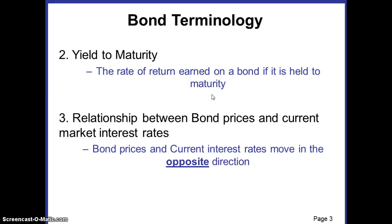...the rate of return he earns on that bond held until the maturity period will be known as the yield to maturity. Generally, the rate of return on a bond includes the principal amount which the investor gets back at the end of the maturity period, plus all the interests earned during that period — whether annual, half-yearly, or quarterly.